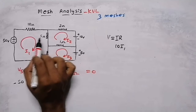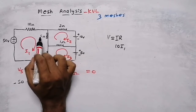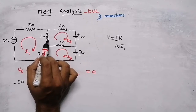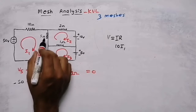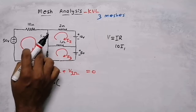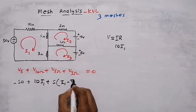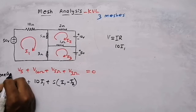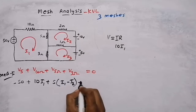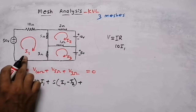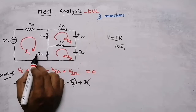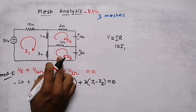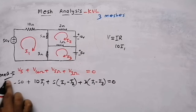The 5 ohm resistor is common to both mesh one and mesh two. So here I1 current and I2 current will both be present. In such a case, we write 5 times (I1 minus I2). If you are writing the mesh equation with respect to mesh one, then write I1 minus I2. If writing with respect to mesh two, then write I2 minus I1. Then the 3 ohm resistor is common for both mesh one and mesh three, so we write 3 times (I1 minus I3), since we are writing with respect to mesh one.